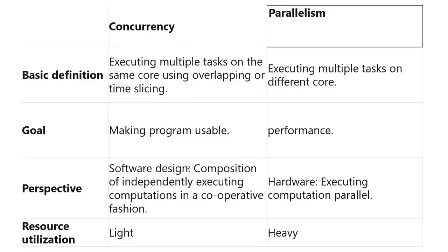Let us put a conclusion. Both Concurrency and Parallelism mean executing multiple tasks. Concurrency means executing multiple tasks on the same core, while Parallelism means executing multiple tasks on different hardware — different cores or different machines. Concurrency is a feel of Parallelism; it uses time slicing and context switches. The goal of Concurrency is making a program usable and non-blocking. The goal of Parallelism is performance — increasing performance many times. In Concurrency, the most important part is how you divide your application into individual computation units and how they talk with each other. In Parallelism it is about having parallel units and executing them on different hardware.